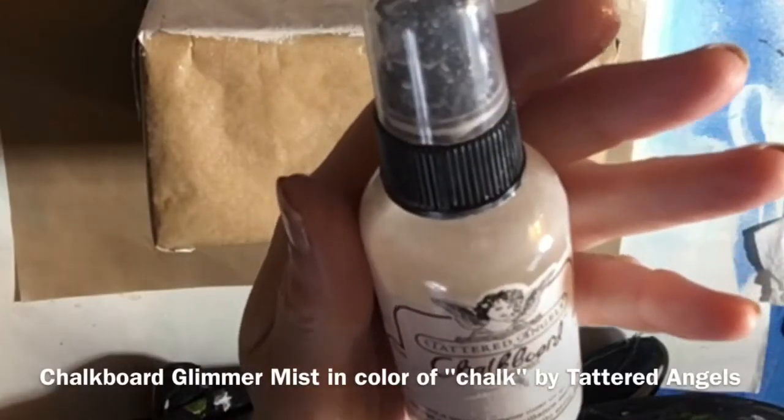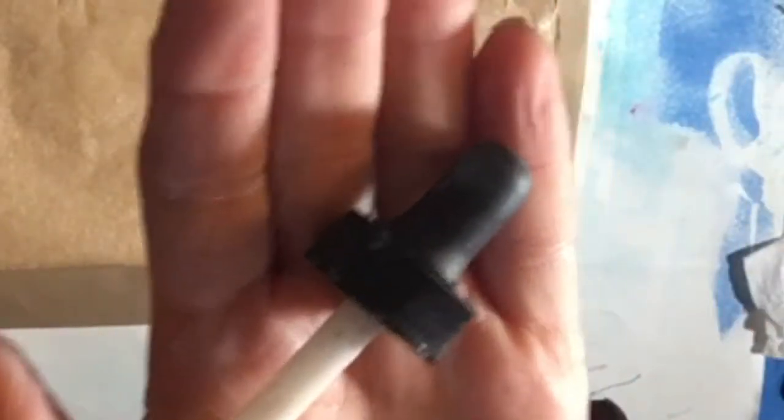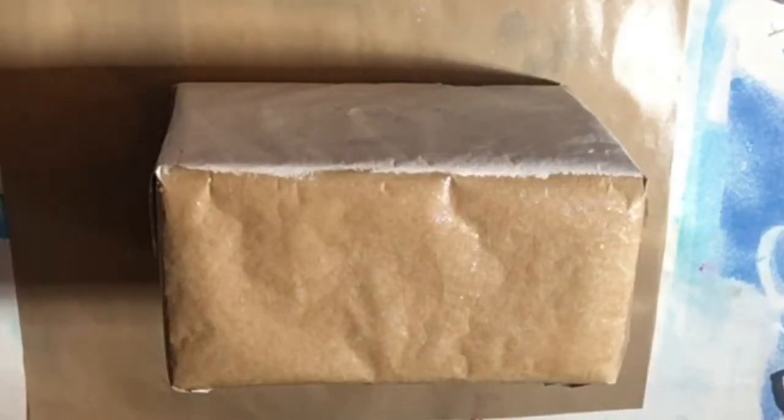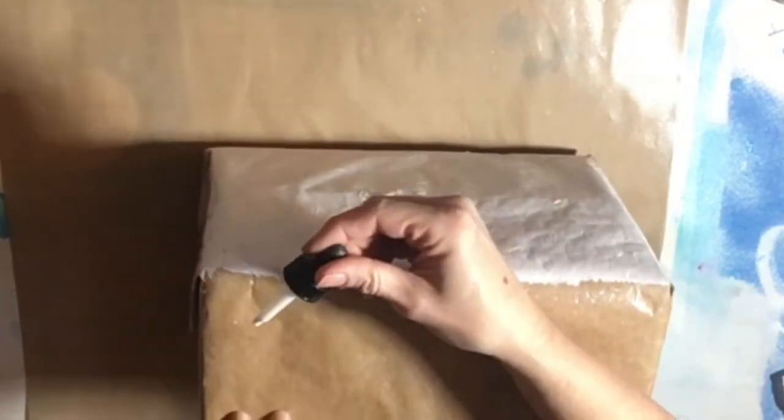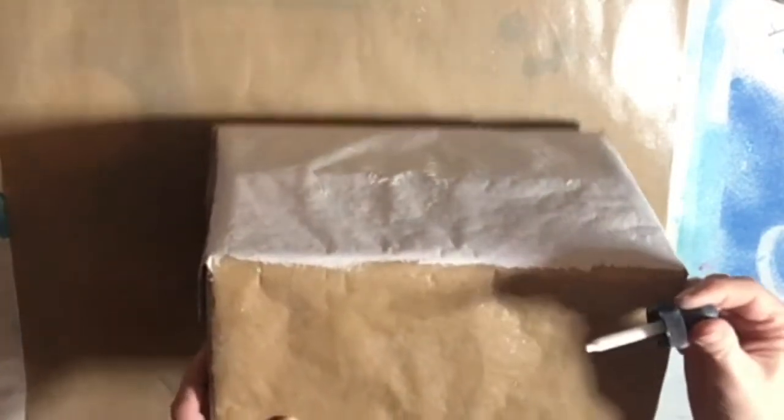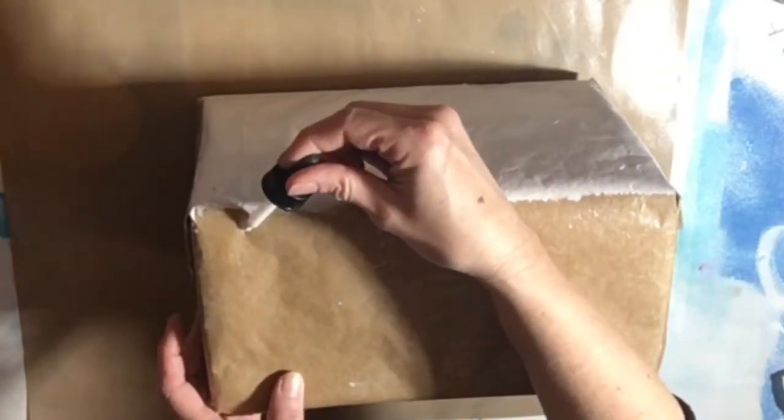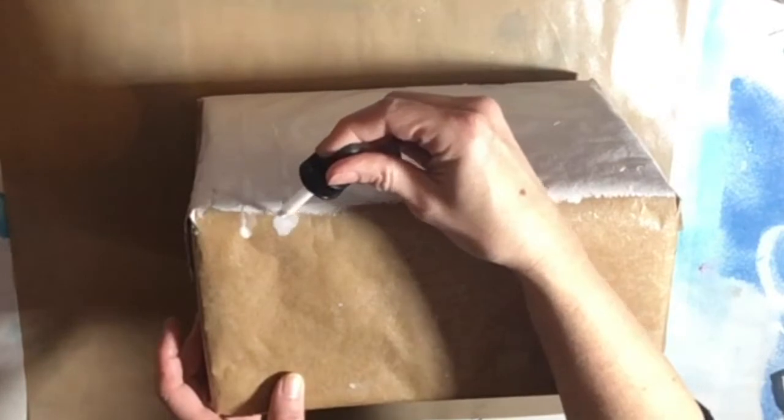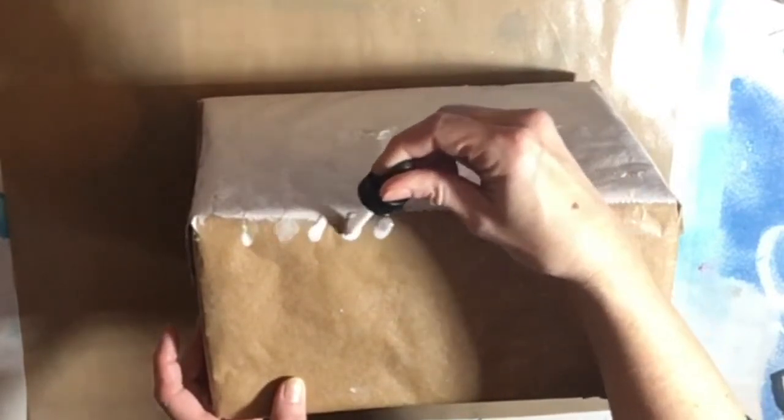So the next step, this is Tattered Angels brand white chalk, or the color I think it's just called chalk. And instead of spraying it on, that doesn't work good for drips, I'm using a dropper and I unscrew the misting top and use a dropper that I have for dropping on the Tattered Angels chalk glimmer mist.